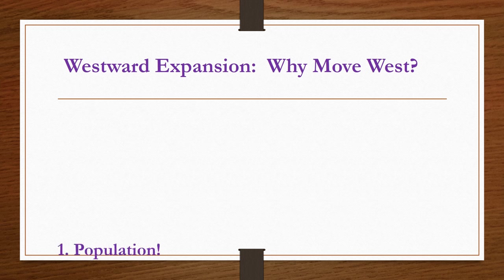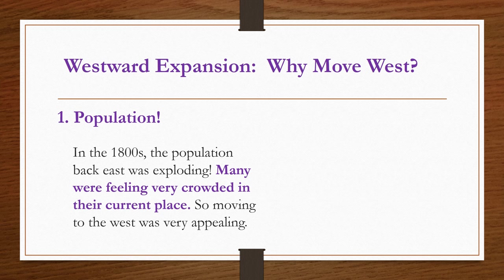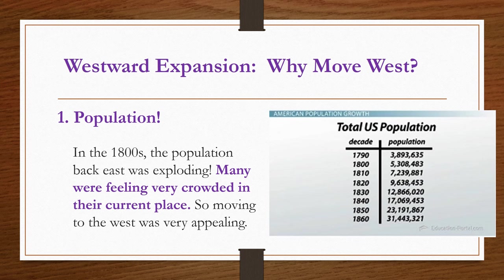The first reason why Americans chose to move west was population — you can even put an exclamation point after that! In the 1800s, the population back east was exploding. Many people were feeling very crowded, so moving west was very appealing. You can see this chart of the total US population — look at the growth between 1790 and 1860. Go ahead and do a subtraction problem to find the difference in population between those two years.